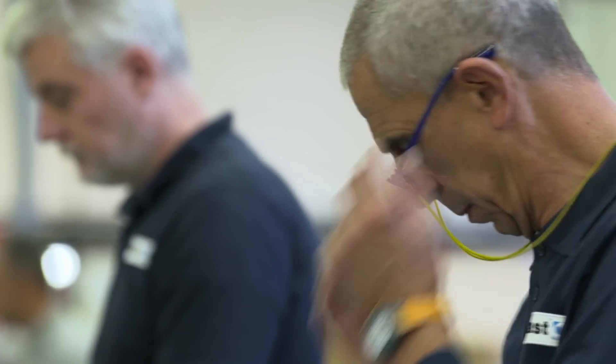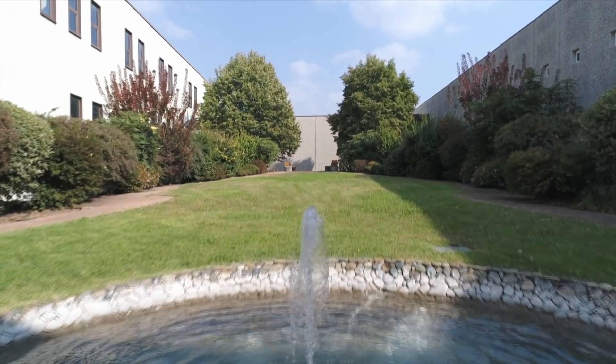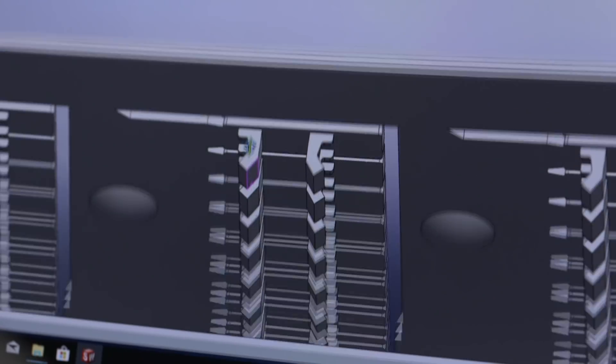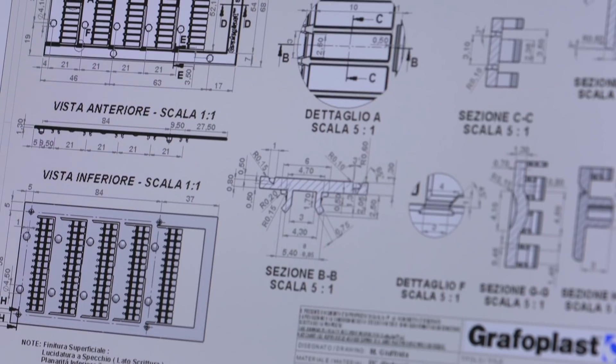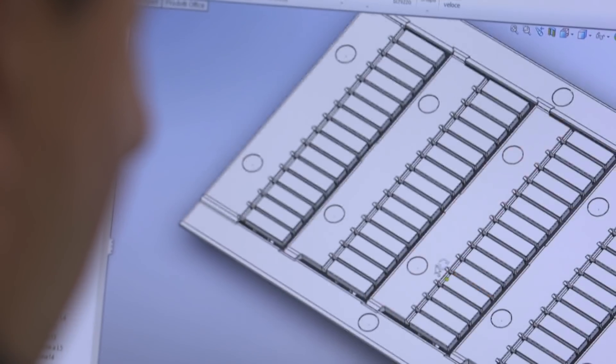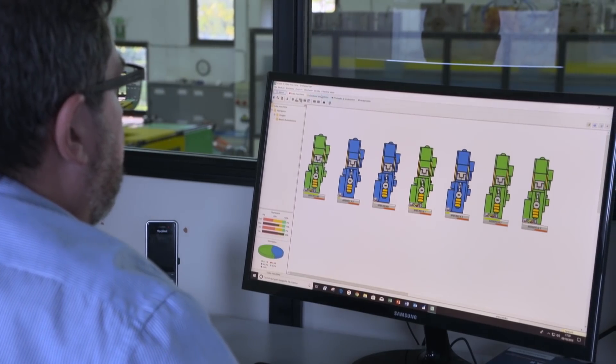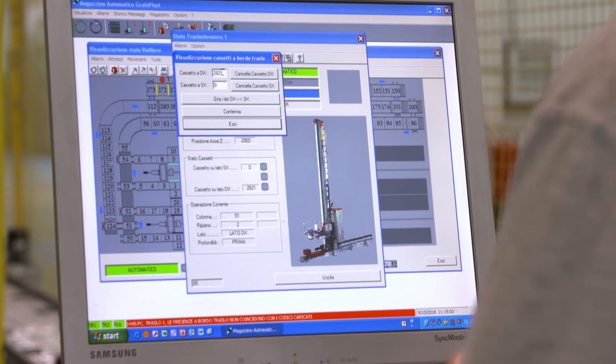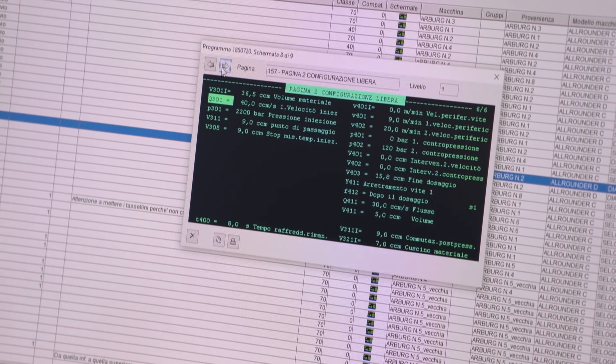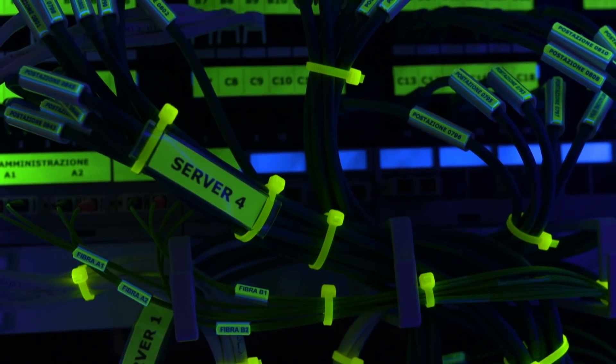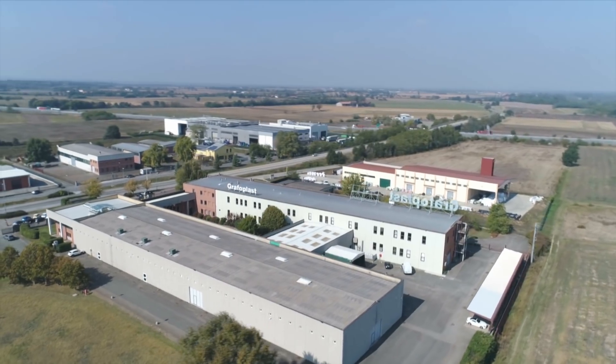The Graphoplast team of engineers designs and develops all the molds in-house and follows the entire chain for the realization of its products. It is an automated and interconnected environment in which every element interfaces with the others and people can devote themselves to optimization and development.